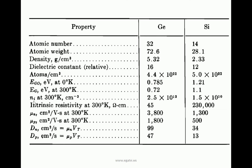Intrinsic implies pure. μ_n is mobility of electrons for germanium and silicon. μ_p is mobility of holes. D_n is diffusion constant of electrons. D_p is hole diffusion constant or diffusion constant for holes.